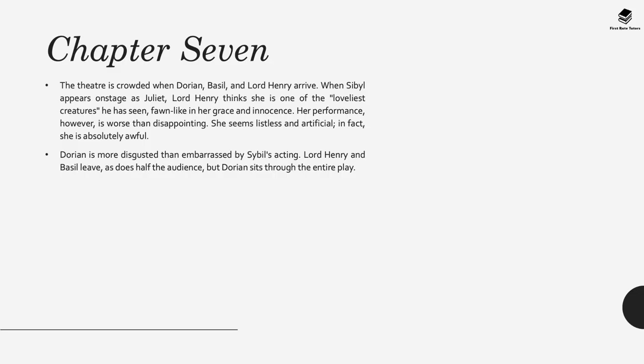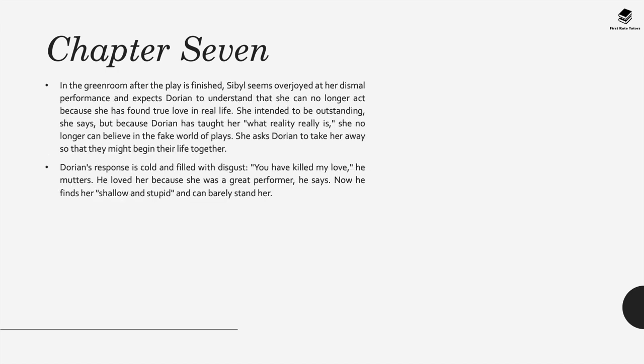In chapter seven, all three men arrive at the theatre—Dorian, Basil and Lord Henry—along with other guests. When Sybil appears on stage she's performing as Juliet. However her performance is lacklustre. Even if Lord Henry believes her to be a beautiful creature, all three men find that her performance is listless and artificial—in fact, her performance is awful. Dorian appears really disgusted and somewhat embarrassed by Sybil's acting. Lord Henry and Basil leave, as does half of the audience. However Dorian sits through the entire play.